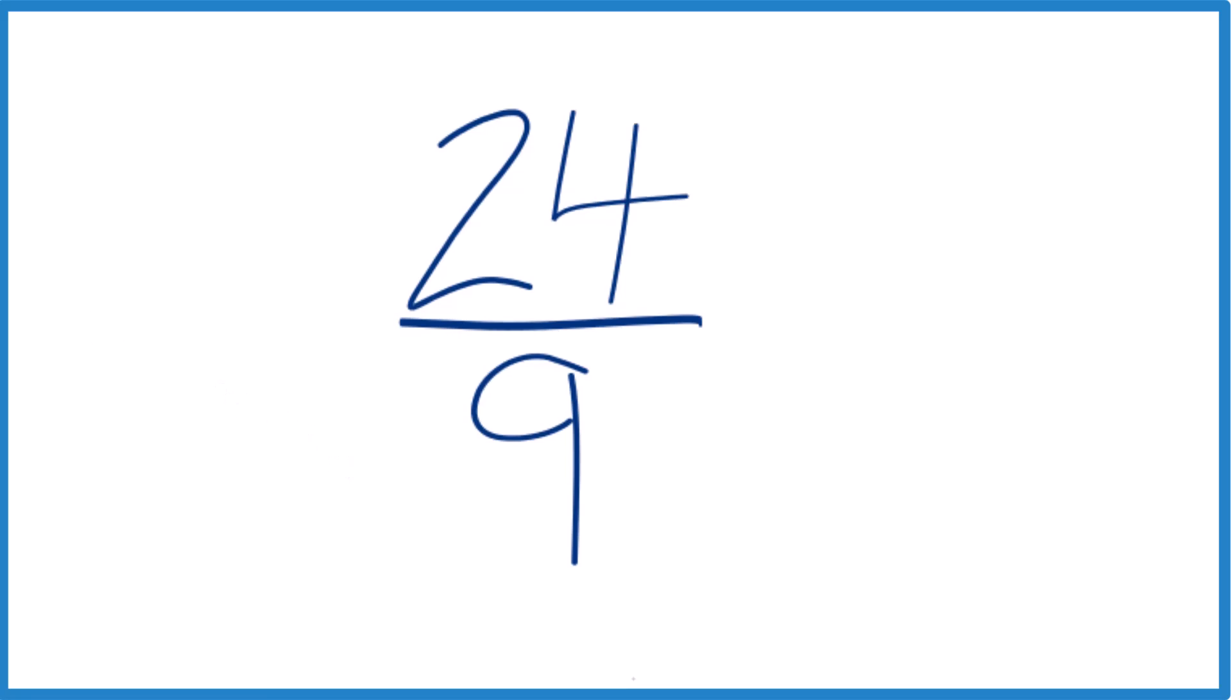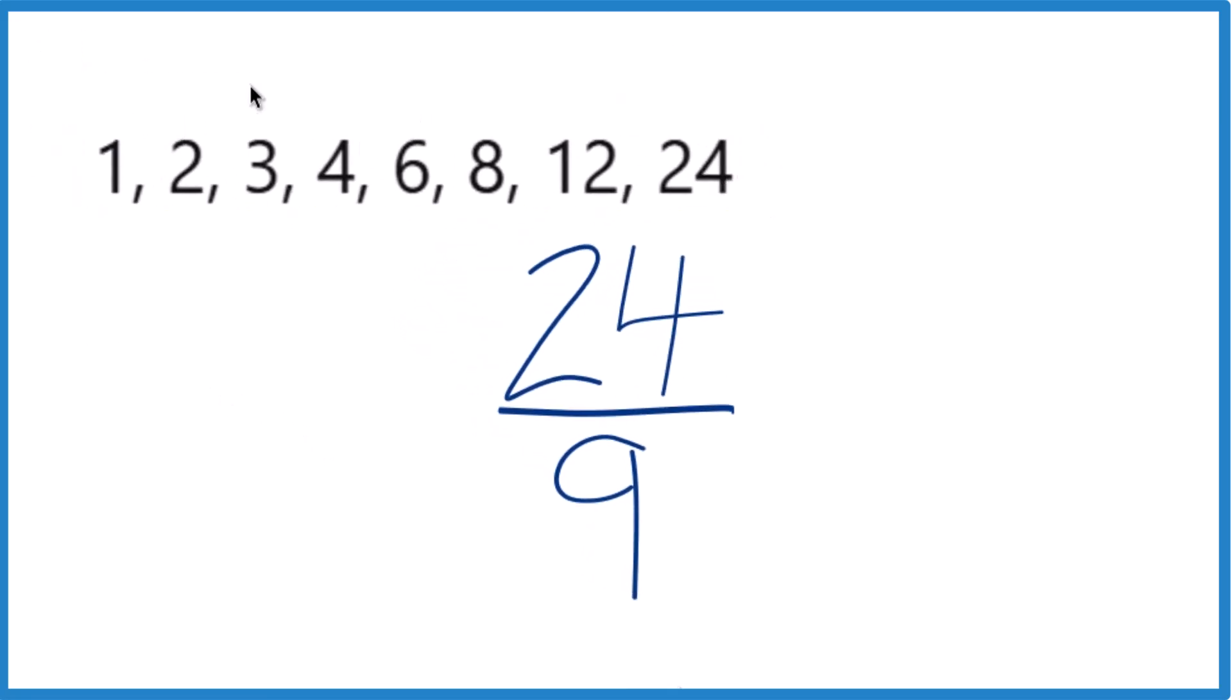So the factors for 24, here they are: 1 times 24, 2 times 12, 3 times 8, and 4 times 6. For 9, we have 1 times 9, and then we'd have 3 times 3, but that's it.